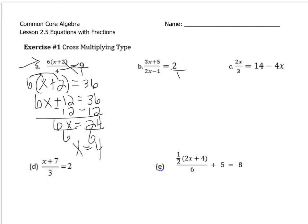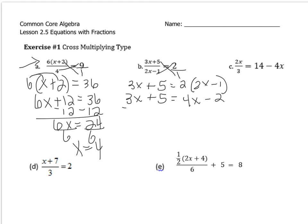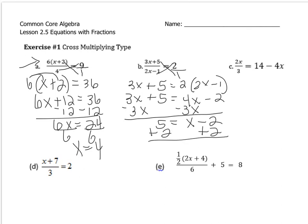This next one is very similar because it's a fraction set equal to a whole number. Let's put that whole number over 1 — it doesn't change its value but turns it into a fraction. We'll cross multiply: 1 times (3X + 5) is just 3X + 5, and 2 times (2X − 1). I like to write this step so I don't make any mistakes. Distributing gives 3X + 5 = 4X − 2. Subtracting 3X from both sides gives 5 = X − 2. Adding 2 to both sides gives X = 7.